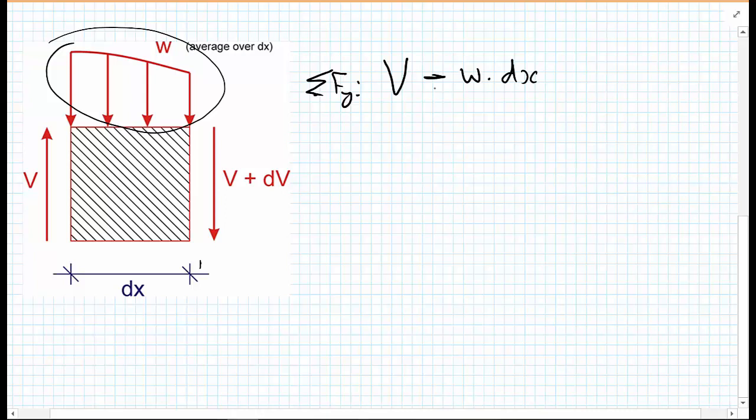And on the right-hand side, for our positive shear force convention, we have a shear force V plus a tiny portion DV, and how the shear force has varied over this little section. And for this to be in equilibrium, this must be equal to zero.